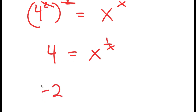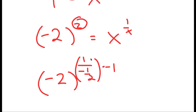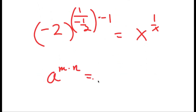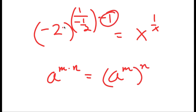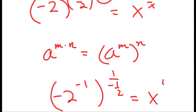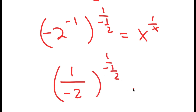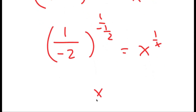Now, 4 is the same as negative 2 squared, and the exponent 2 can be rewritten as 1 over negative 1 half times negative 1. Using the property that a to the power of m times n equals a to the power of m to the power of n, the negative 1 becomes an exponent of negative 2, giving negative 2 to the power of negative 1 to the power of 1 over negative 1 half. Since negative 2 to the power of negative 1 equals 1 over negative 2, or negative 1 half, the solution is x equals negative 1 half.